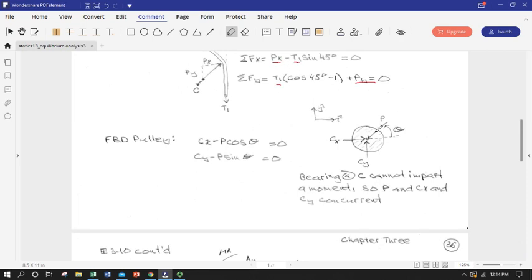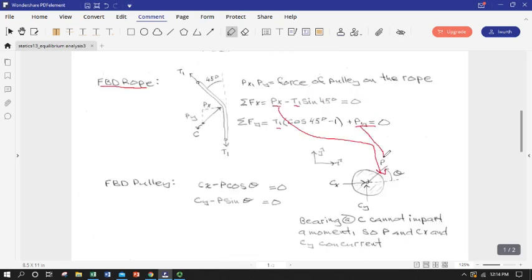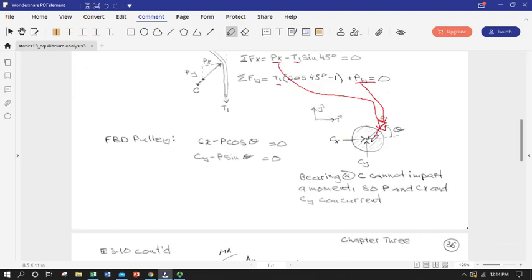And then we can take that information, write it as a single vector and use Newton's third law in our FBD of the pulley. So we can take PX and PY, create a vector P total, and the PX and PY we sum them to make a P total and that's the force of the rope on the pulley which is the same as the pulley on the rope except opposite direction.